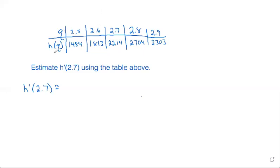Okay, so this problem gives us a table of data of q values and h of q, and then it says to estimate h prime of 2.7 using the table above. So what we're trying to find here is we're trying to estimate the slope of the graph when q is equal to 2.7.